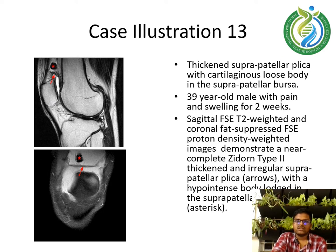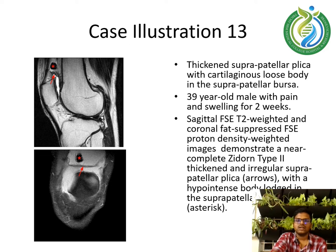Case illustration 13: thickened suprapatellar plicae with cartilaginous loose body in the suprapatellar bursa. A 39-year-old male with pain and swelling for 2 weeks. Sagittal FSE T2-weighted images and coronal fat-suppressed FSE proton density weighted images demonstrate a near-complete Zidane type 2 thickened and irregular suprapatellar plicae with a hypointense body lodged in the suprapatellar bursa.